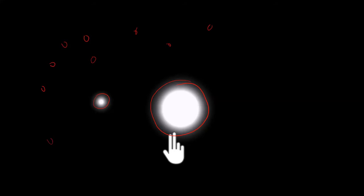Since stars are very far from us, they are considered as point sources of light. On the contrary, as planets are near to us, the distance between Earth and all the other planets is very less compared to the stars. Therefore, planets are considered as a combination of point sources — a star is like one point source, whereas a planet can be considered as many point sources.